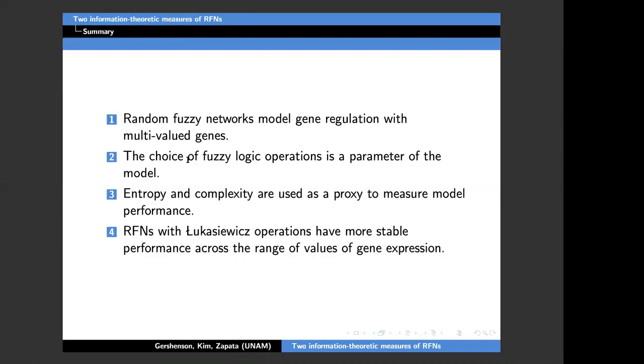This is the summary of the talk. Random fuzzy networks model gene regulation with multi-valued genes, not just binary states as the traditional Kaufman model. The choice of fuzzy logic is also a parameter of the model. The entropy and complexity, we propose them and use them as a proxy to measure the performance of the model. We see that the random fuzzy networks with Lukasiewicz operations have more stable performance across the range of all the gene expression. That's it. Thank you.